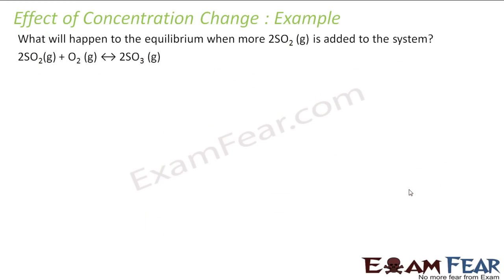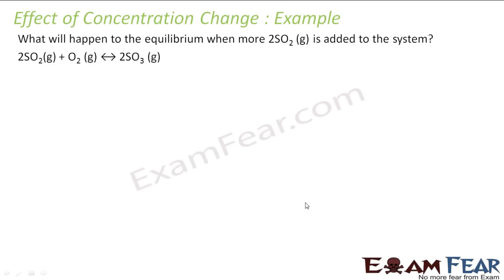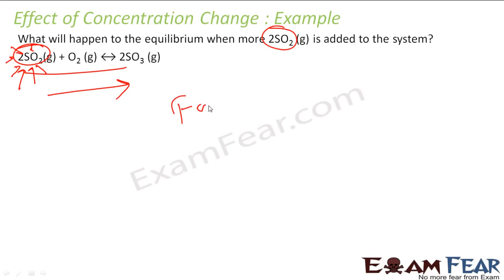Let's take a numerical example on the effect of concentration change. For the reaction 2SO₂ + O₂ ⇌ 2SO₃, what will happen to the equilibrium when more SO₂ is added? If we add more SO₂, the system will move in the direction that reduces the concentration of SO₂ — that means the reaction will move in the forward direction. Just by looking at the equation you can tell this.